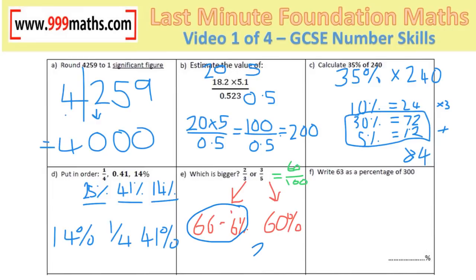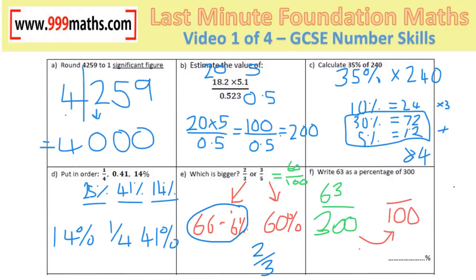Never just circle the answer in an exam — always write it down clearly. The final question: 63 as a percentage of 300. Start by writing it as a fraction: 63 out of 300. We need that out of 100, so rewrite it as a fraction out of 100 by dividing by 3.